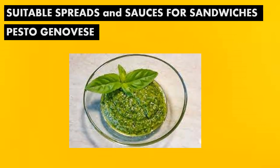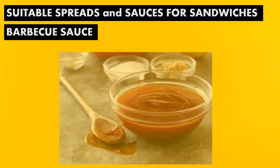Next, we have the pesto genovese. It consists of extra virgin olive oil, garlic, basil, pine nuts, parmesan, and pecorino cheese. For the next sauce, we have the barbecue sauce. It consists of onions, garlic, olive oil, peeled tomatoes, tomato paste, sugar, vinegar, mustard, Worcestershire sauce, tabasco, chili pepper, salt, and pepper. Remember that there are other variations of barbecue sauce, so you can make your own recipe.